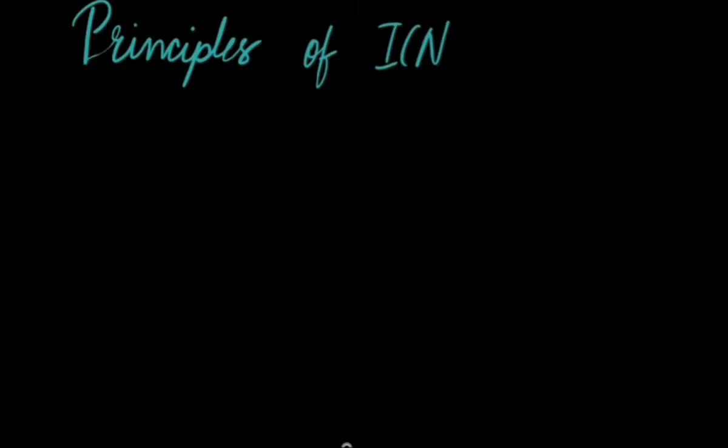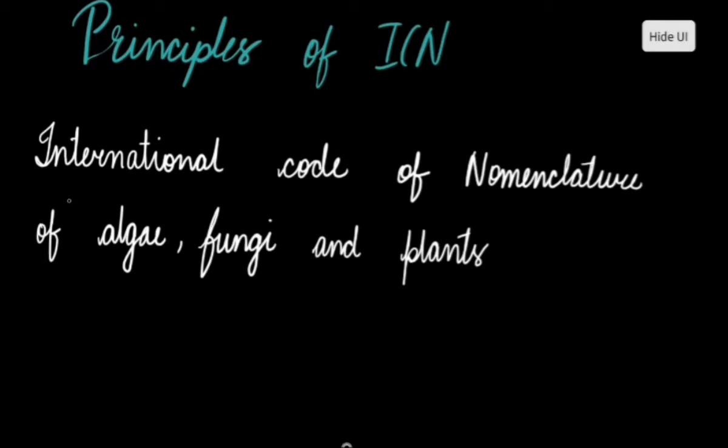Hello class, so the topic for today's discussion is principles of ICN. ICN was previously known as ICBN, International Code for Botanical Nomenclature, but the use of that abbreviation is now obsolete. ICN now stands for International Code of Nomenclature for algae, fungi, and plants. This entire code is based upon six principles.